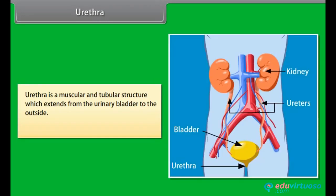The urethra is a muscular and tubular structure which extends from the urinary bladder to the outside. It carries the urine out of the body.